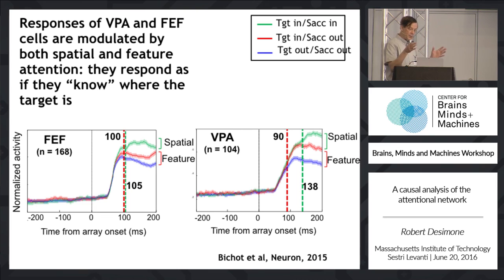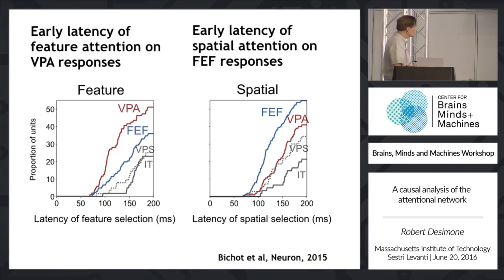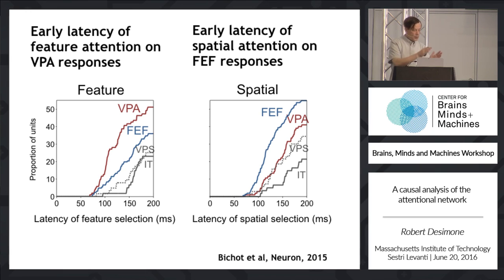For the feature attention component — modulation according to whether the object is what the animal is looking for — the signal in VPA comes earlier. Cells show this differentiation of response at shorter latencies in VPA than in the frontal eye fields. Looking at the cumulative distribution of latencies across cells, VPA cells show the earliest latencies for feature-based attention while frontal eye field cells show the earliest latencies for spatial attention, suggesting that VPA may be the source of information about where the target object is.